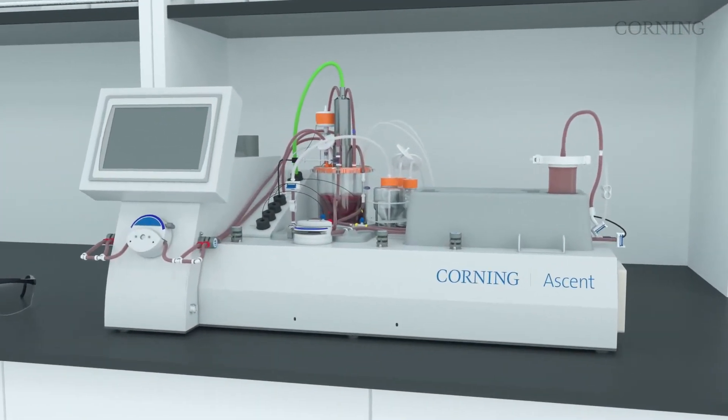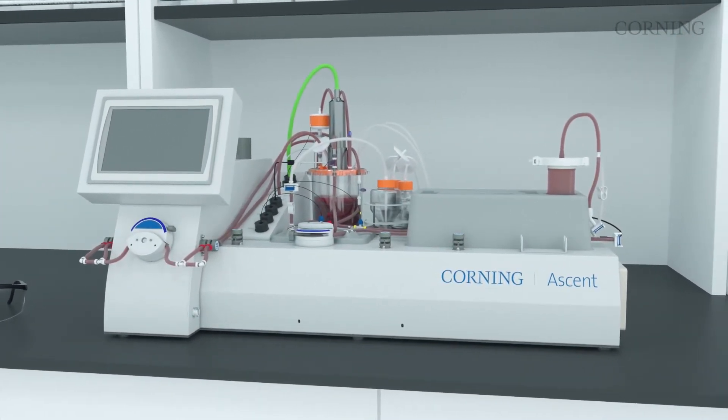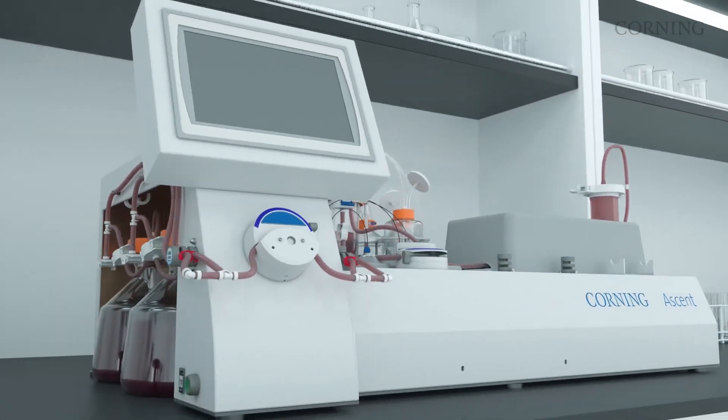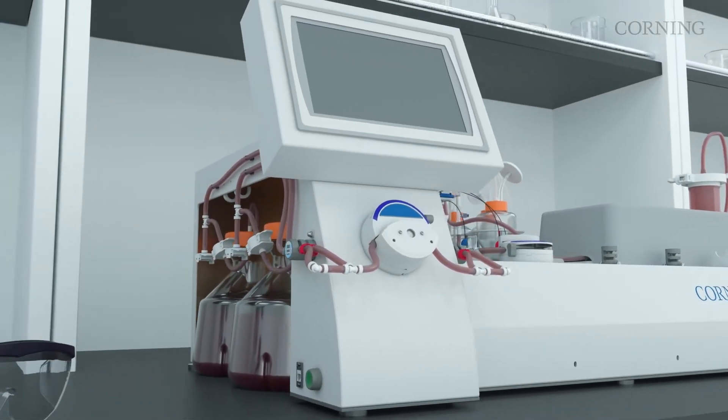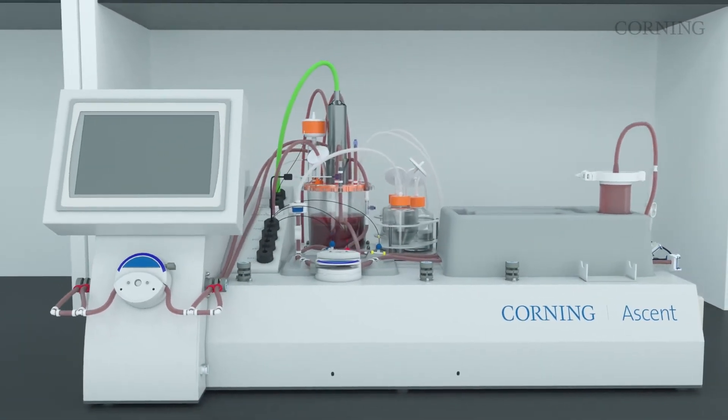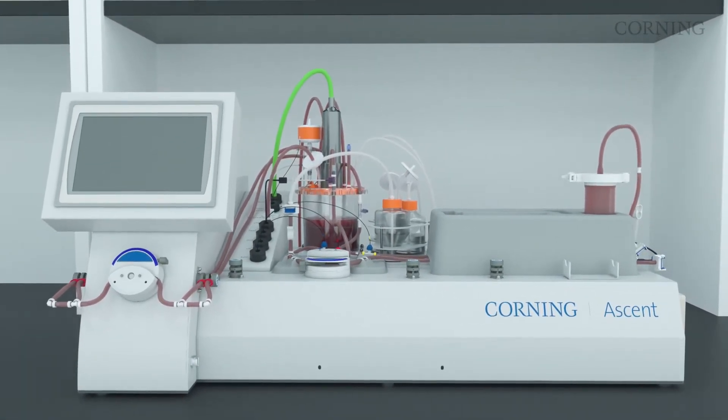To address that need, Corning developed the Ascend FBR fixed bed reactor technology. The Corning Ascend FBR system is specifically designed to provide the yield efficiency of adherent cell culture and the scalability of suspension processes.